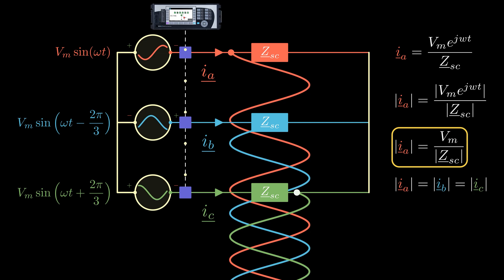But what if that was not the case? What if the system was unbalanced? How do we find the short circuit currents then? Well, stick around till the end of the video to find out. First, before diving into the unbalanced system, we need to define what an ABC balanced three-phase system actually is.